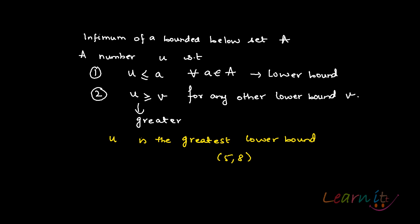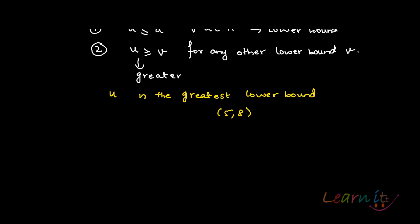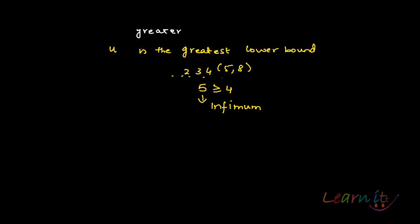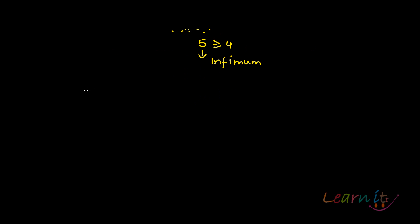Consider the open interval (5, 8) as an example. It has many lower bounds — like four, three, two, and so on. We noted that four is a lower bound and five is also a lower bound. Since five is greater than four, and five is the greatest among all lower bounds, five is the infimum of this open set.